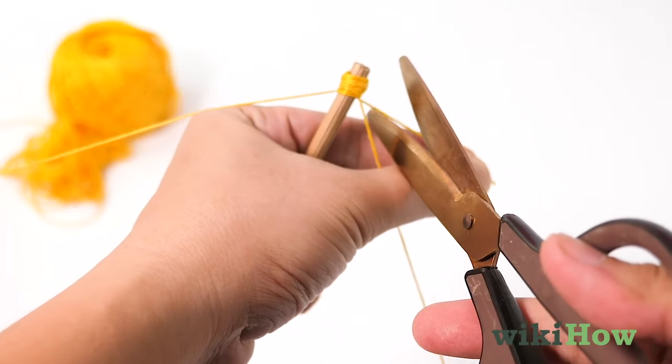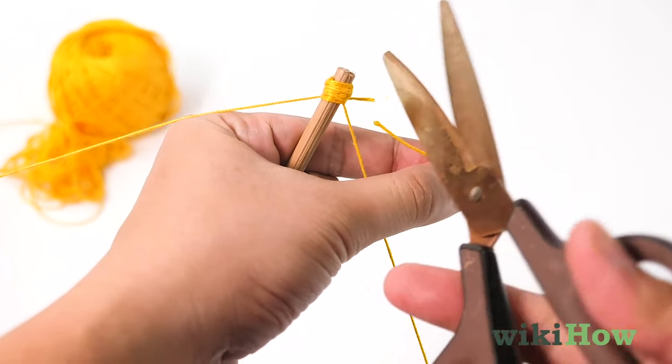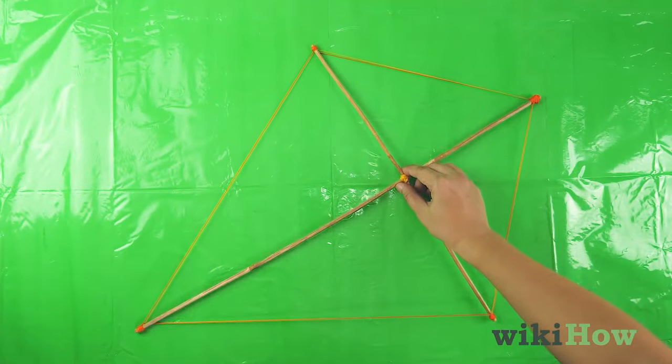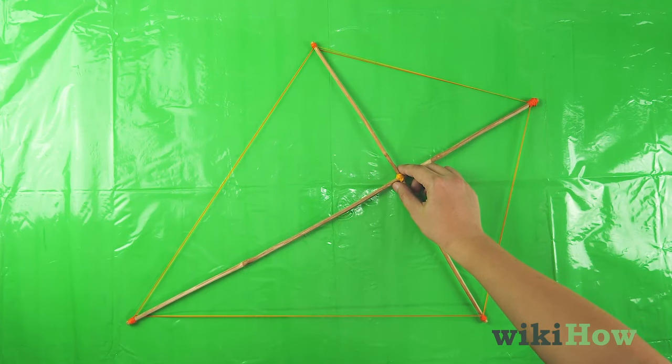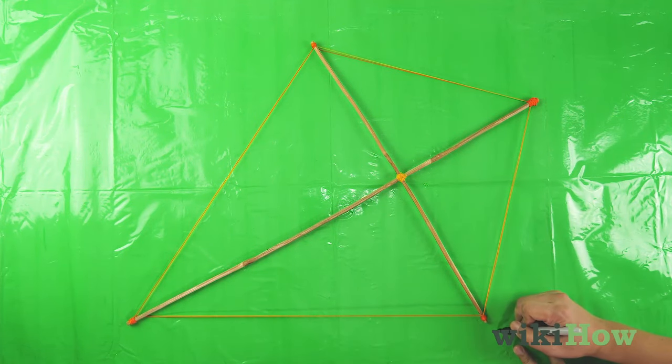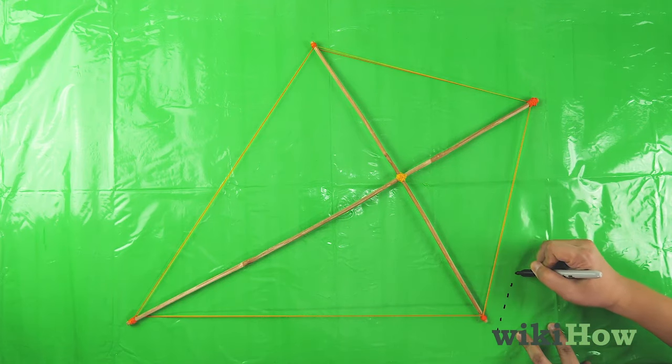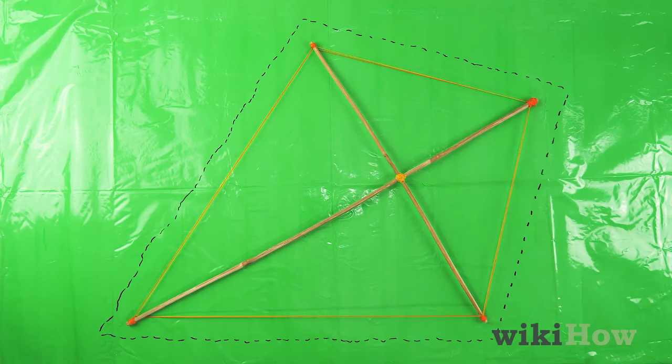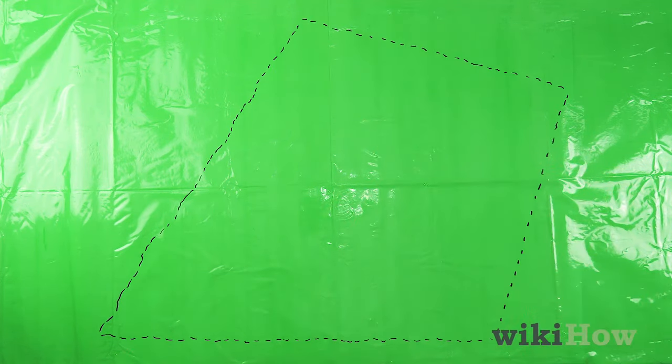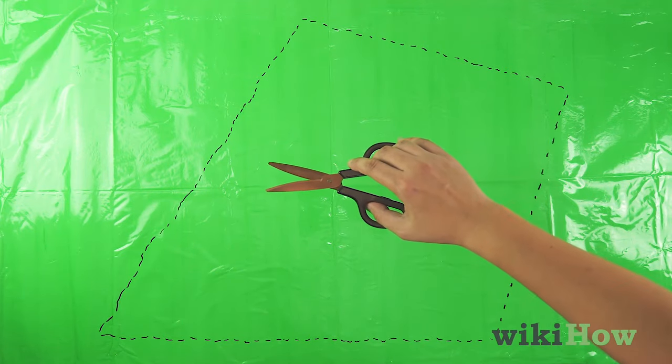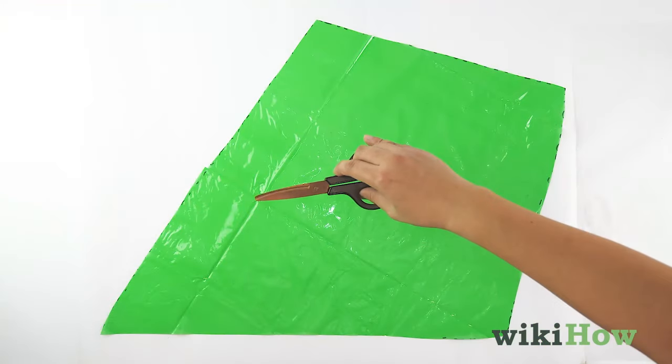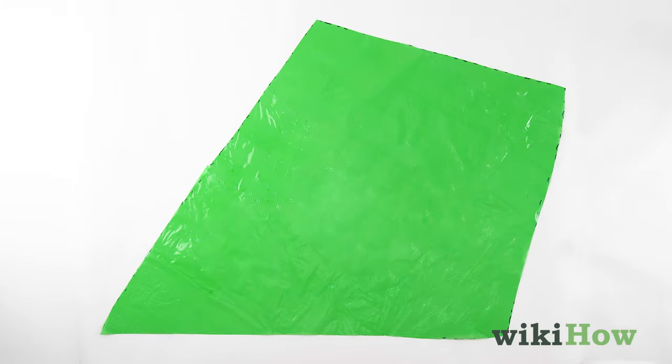Cut off the excess string with scissors. Now lay your frame on top of a garbage bag or sheet of thin plastic and outline the frame with a marker. Set the frame aside and cut around the outline you drew, adding 2 inches (5 centimeters) to each side as you cut.